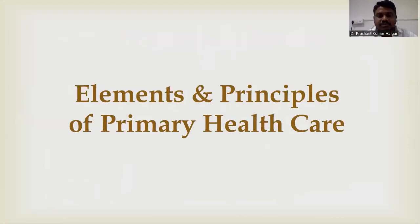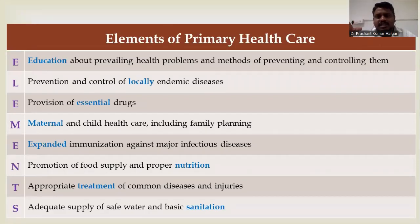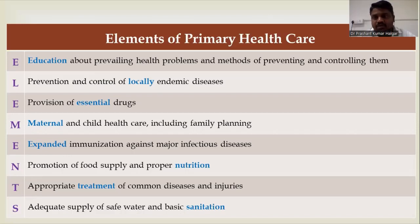Coming to the elements of primary healthcare, they are easy to remember using the word ELEMENTS. 'E' stands for education about prevailing health problems and methods of preventing and controlling them — understanding what the prevailing health problems are in a given area and how to prevent and control them. 'EL' stands for locally endemic diseases — diseases present in that area and how to prevent and control them.